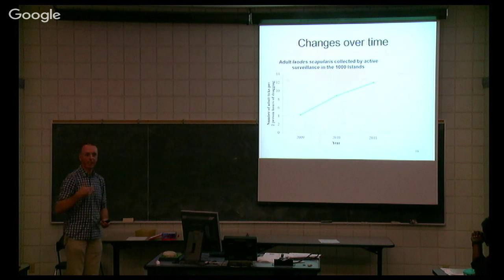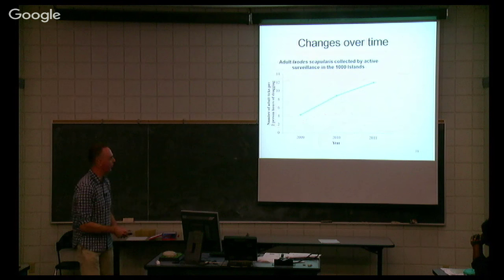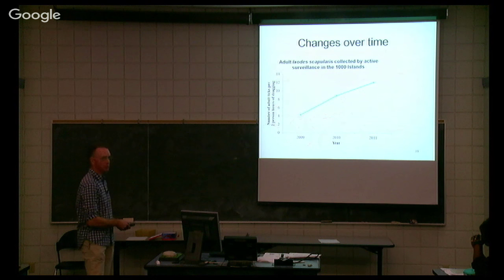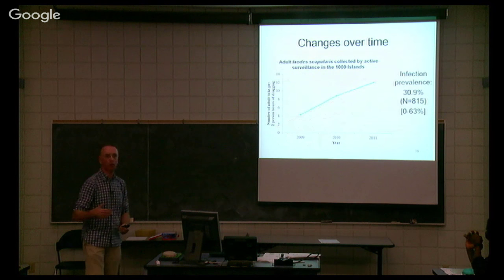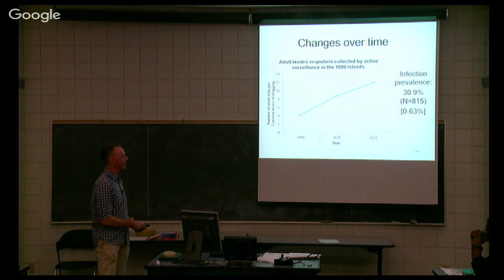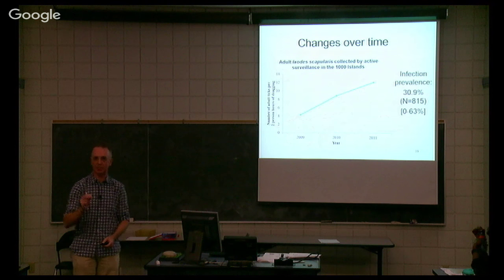Looking at an index of tick burden over the twelve locations in 2009 and 2010 — the y-axis shows the number of adult ticks per two-person hours of dragging as an index of abundance — the figure for the twelve sites in 2009 was already significant, even though there weren't supposed to be any ticks there. It effectively doubled a year later and went up again the following year. The average proportion of ticks infected across the twelve sites varied from zero to sixty-three percent, with an average of just under thirty-one percent. So in a very recently established area, already a significant proportion of ticks were infected.